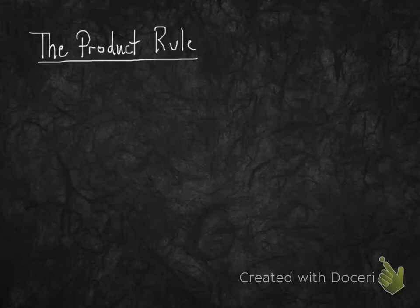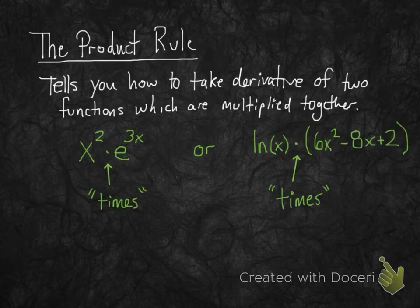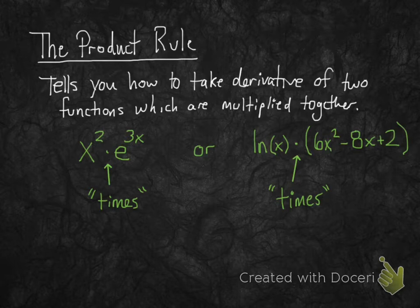Today we're going to learn two rules for taking derivatives. The first is called the product rule, and this tells you how to take derivatives of two functions which are multiplied together. For example, x squared times e to the 3x, or natural log of x times the quantity 6x squared minus 8x plus 2.